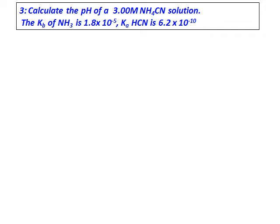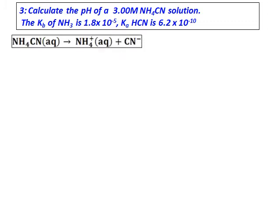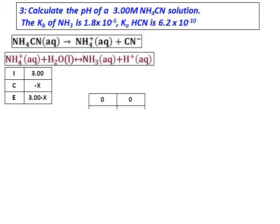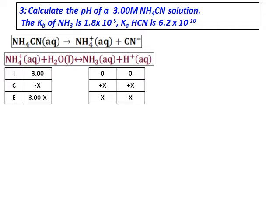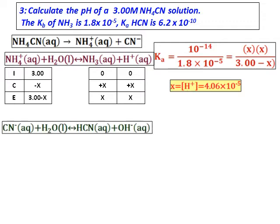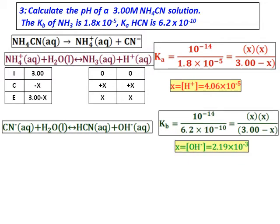Calculate the pH of a 3 molar ammonium cyanide solution. The Kb of ammonia and the Ka of HCN are both given. This is a salt of a weak acid and a weak base, so both ions react with water. For ammonium ions reacting with water, hydrogen ions are produced — using Ka we calculate the hydrogen ion concentration. For cyanide ions reacting with water, hydroxide ions are produced. After calculating Kb, the hydroxide ion concentration comes out as 2.19 × 10⁻³.